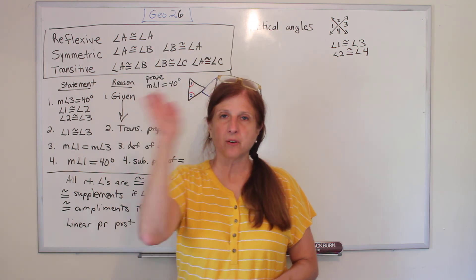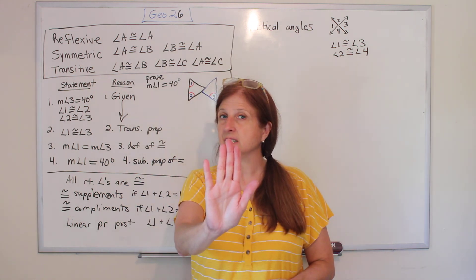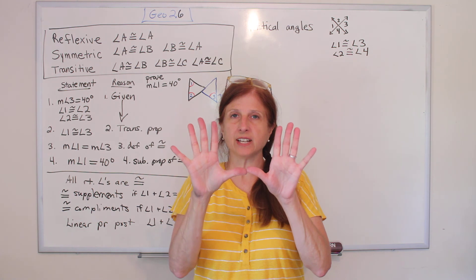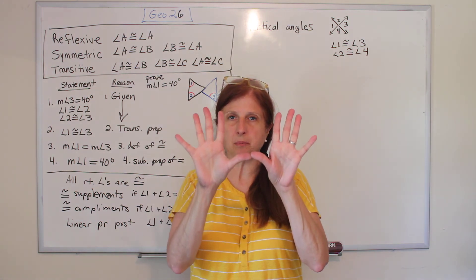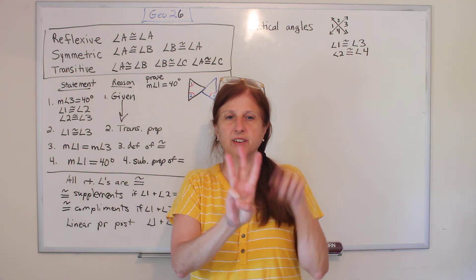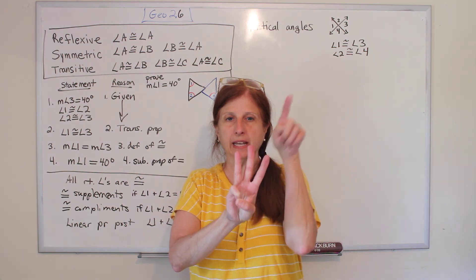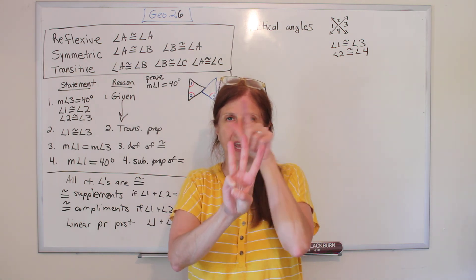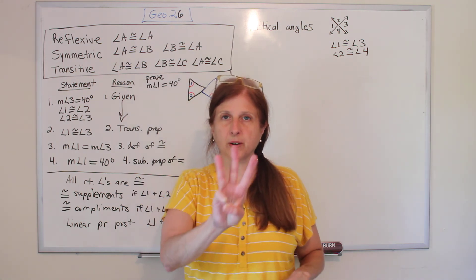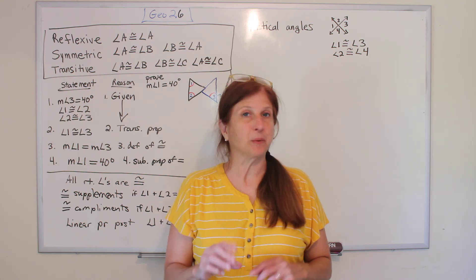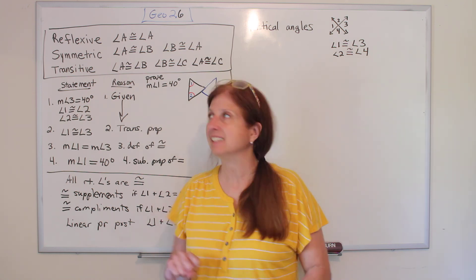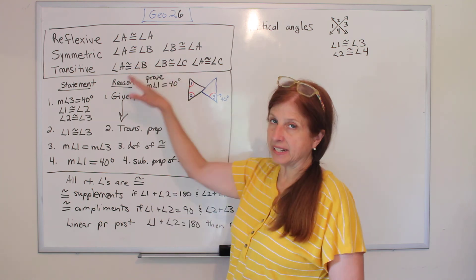So let's review. Reflexive property is A equals A. Symmetric is AB equals BA. And transitive, if A equals B and B equals C, then A equals C. These are our three we've learned so far with a hand sign, but we're going to learn another one today. Yay! Alright, so let's apply it to angles.